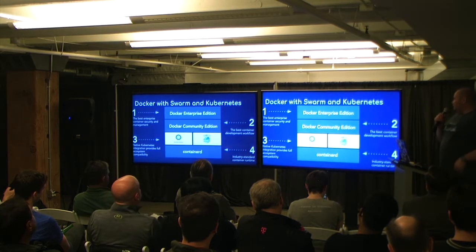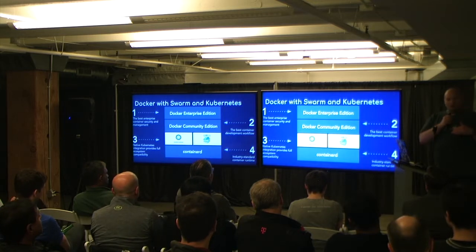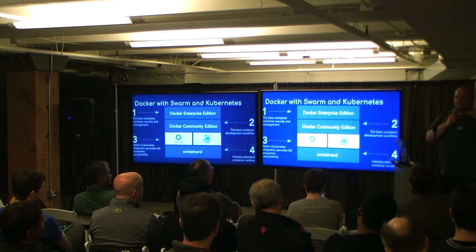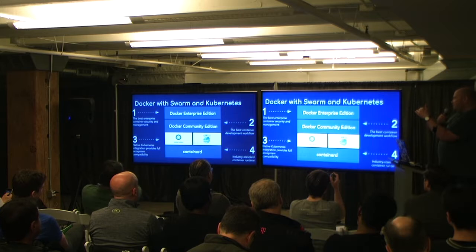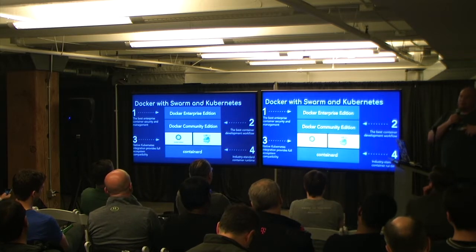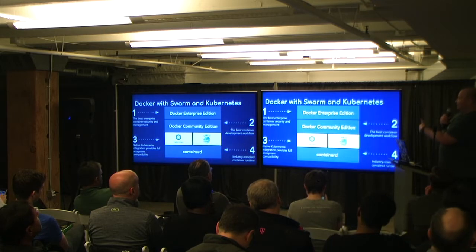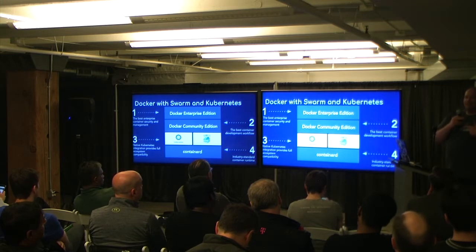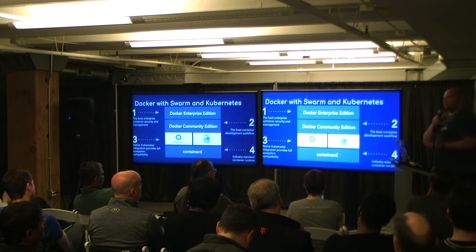So what does that look like? We have ContainerD at the bottom. On top of that, we have Docker Enterprise Edition, which adds a load of security and regulatory features on top of Community Edition. Underneath that, we now support multiple orchestrators as a seamless experience. So if I hit one Docker EE platform, I can deploy to Swarm underneath, or I can deploy to Kubernetes underneath.